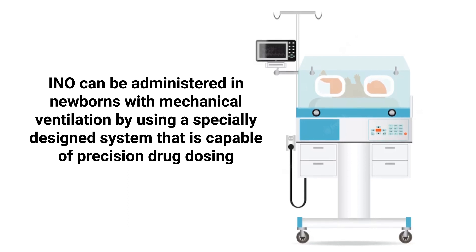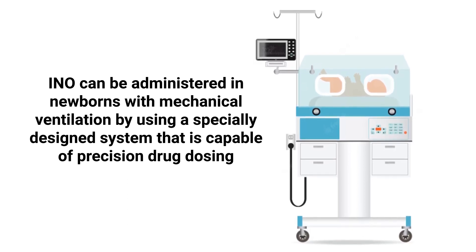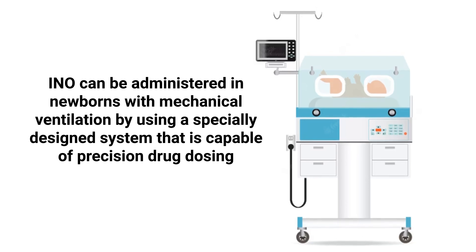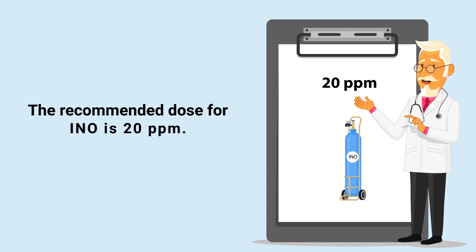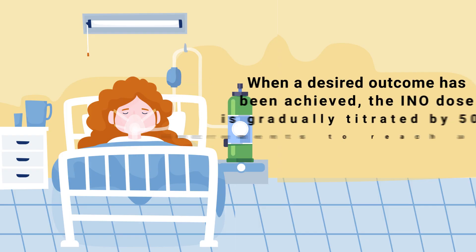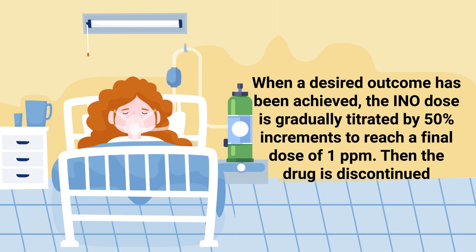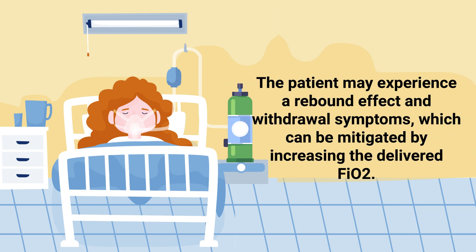Inhaled nitric oxide can be administered with mechanical ventilation using a specially designed system capable of precision drug dosing. The recommended dose is 20 parts per million. When a desired outcome has been achieved, the dose is gradually titrated in 50% increments to reach a final dose of 1 ppm, and then the drug is discontinued.